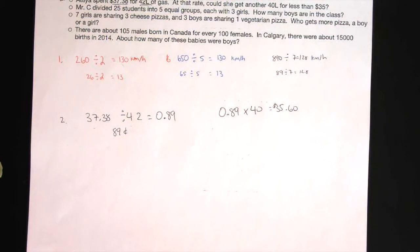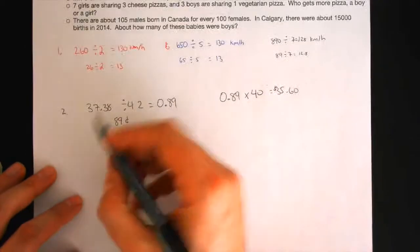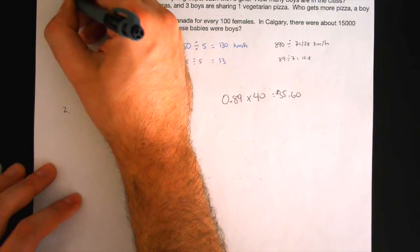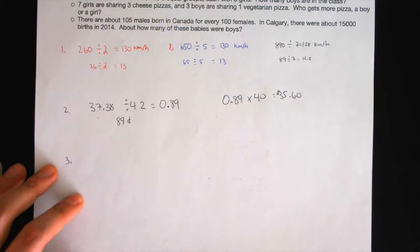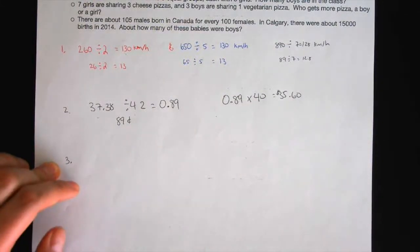But she can get 39 liters of gas, and then she'll have some money left over. Maybe to buy, I don't know, a sour key, right, at the gas station. Who knows?